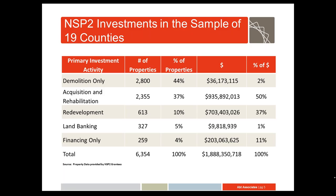This slide shows how NSP2 grantees in the 19 counties that were part of the study spent the money. The counties provide a good mix of market conditions, and together they cover a very large share of all of NSP2 funding. Most of the effort was on acquiring, rehabbing, or redeveloping residential properties, although in terms of numbers of properties affected, simple demolition was a major activity.